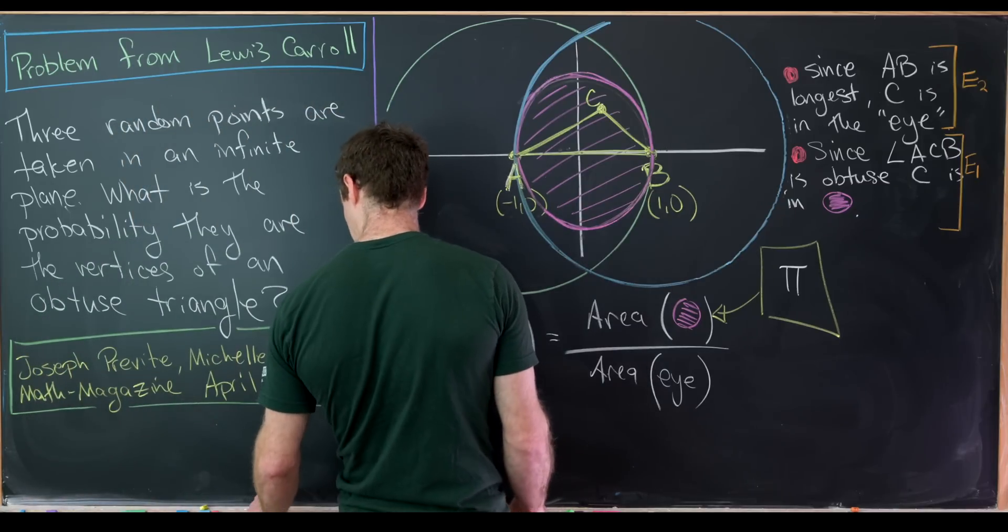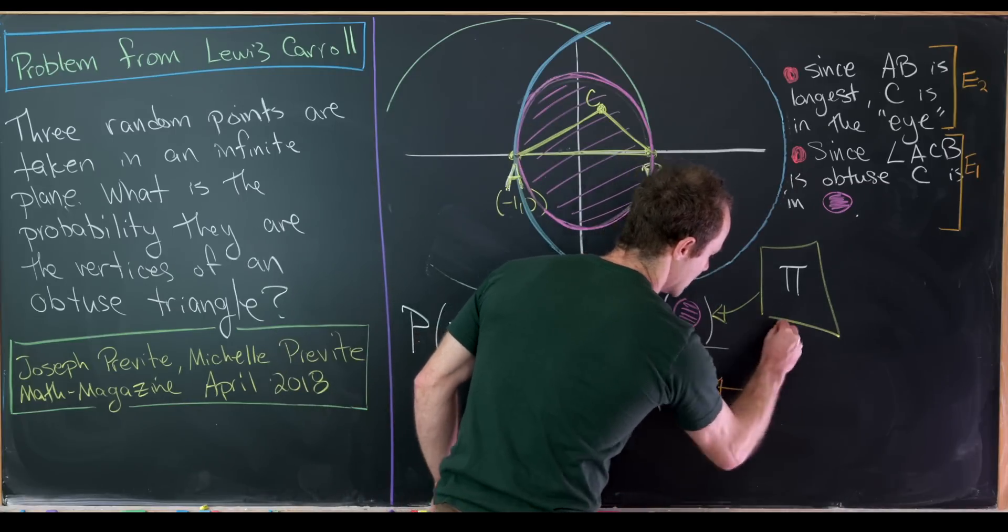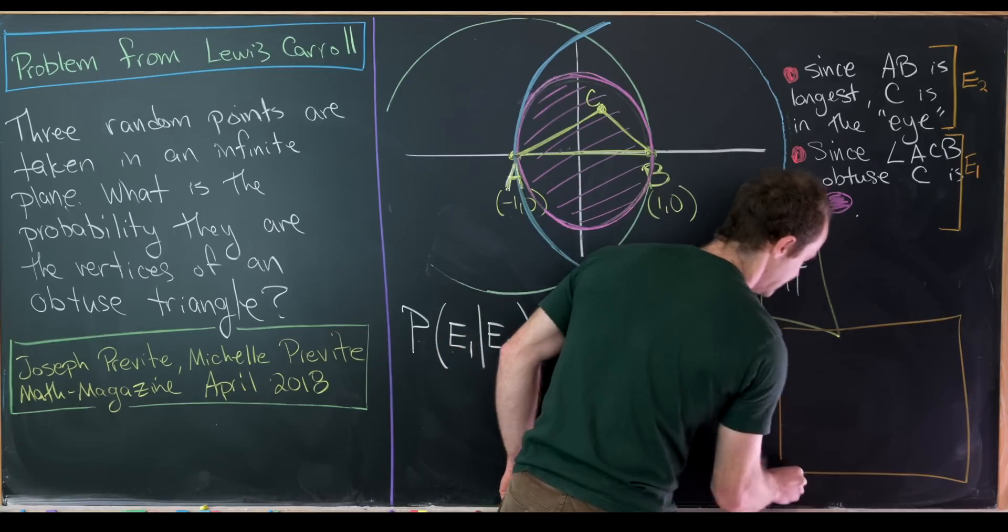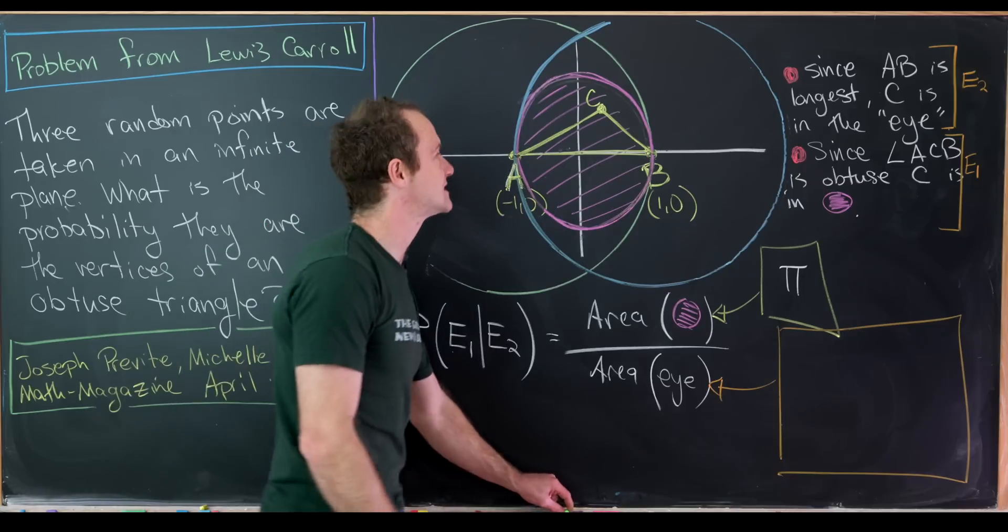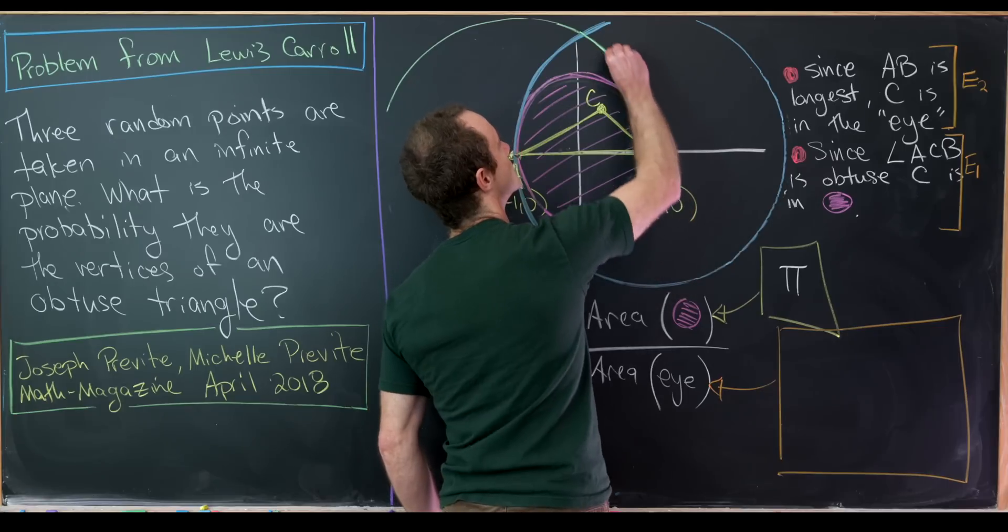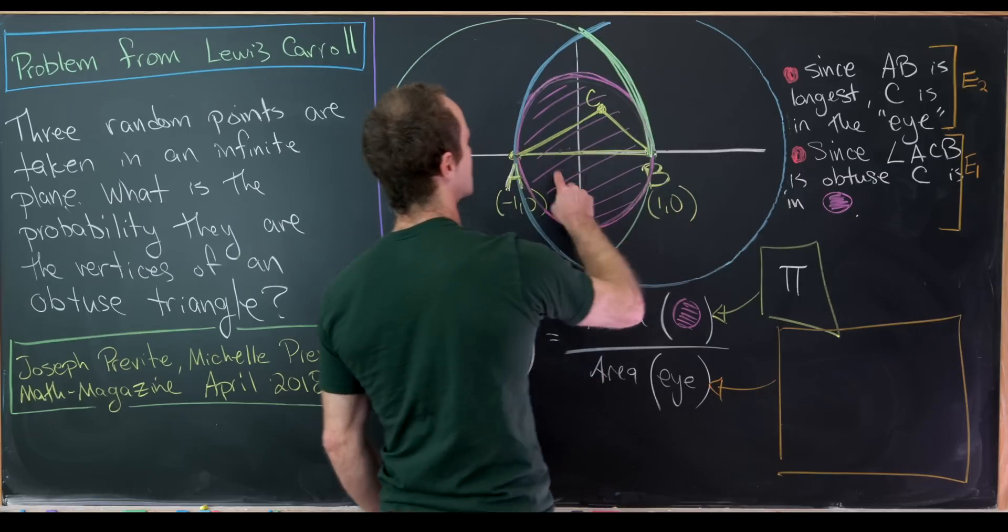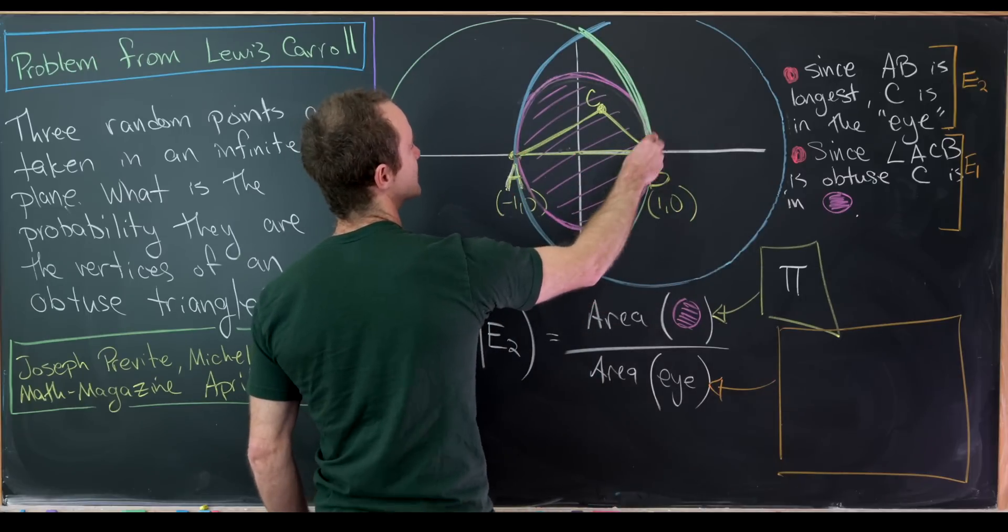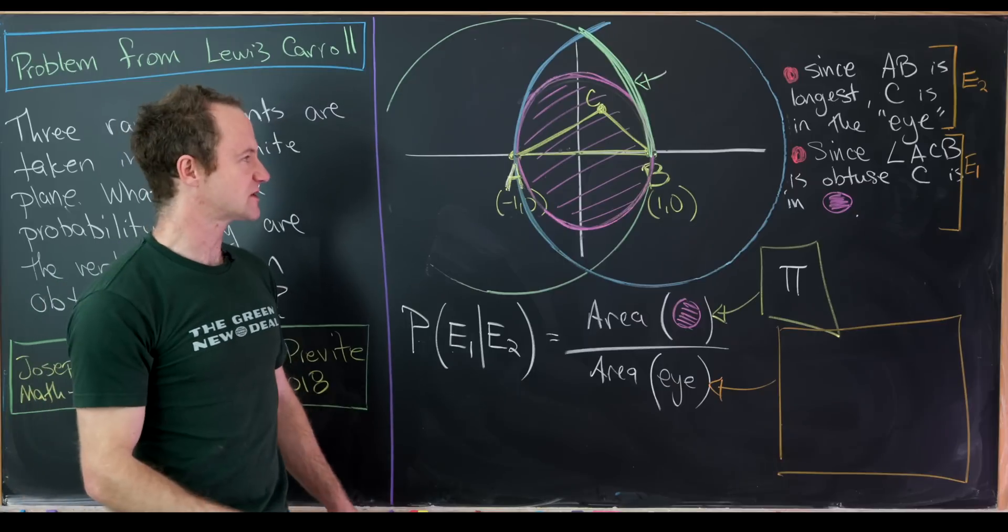But the area of this I is a little bit trickier, and we'll actually use calculus to calculate the area of this I. So what we'll do is envision it as the area under a curve. And under what curve, you might say? Well, it's going to be under this green circle.